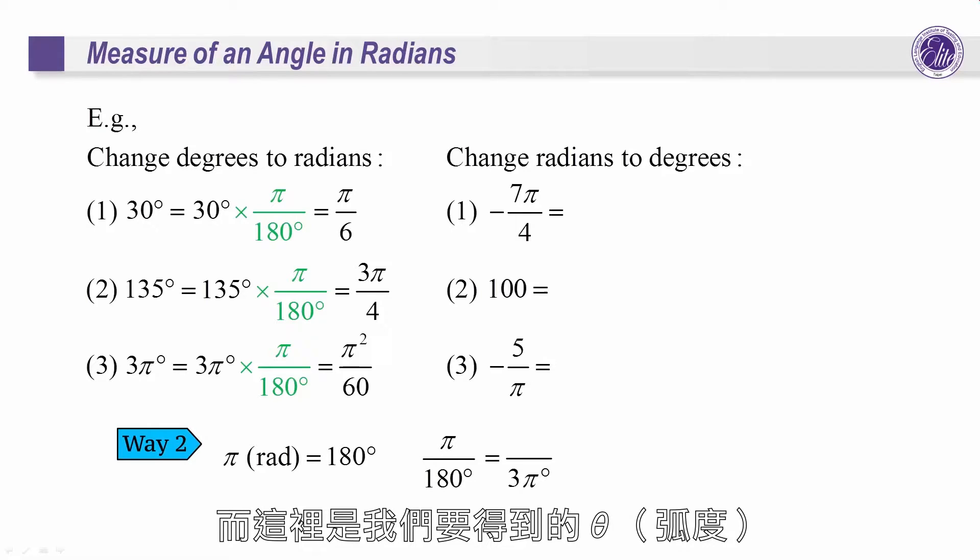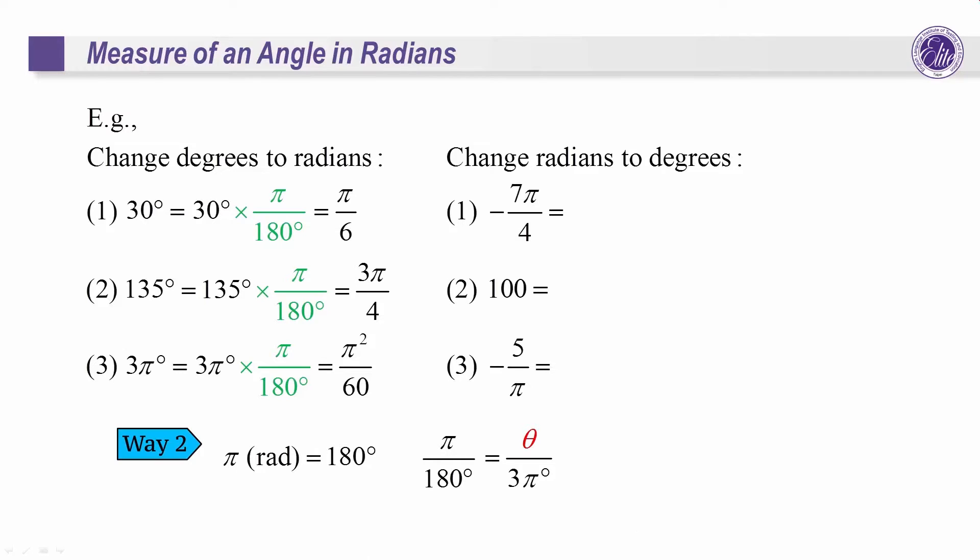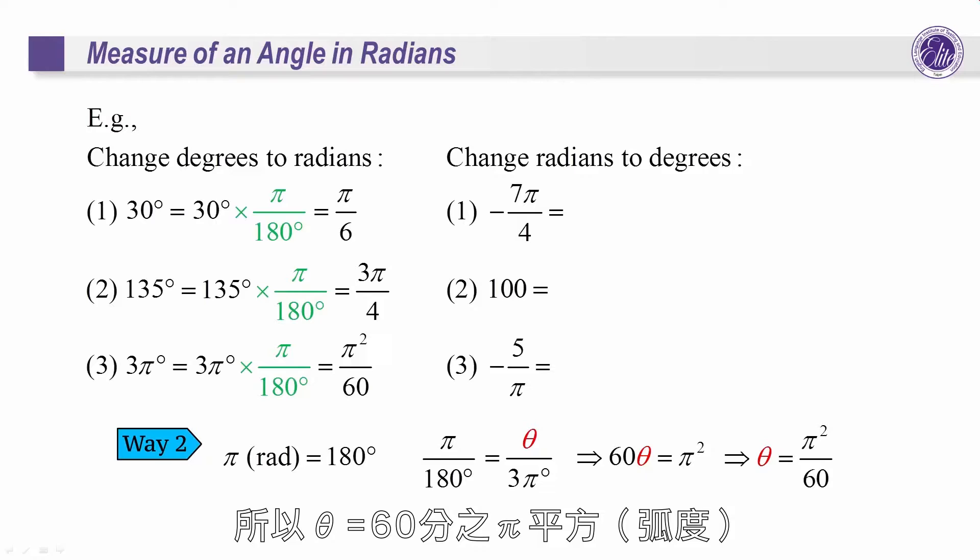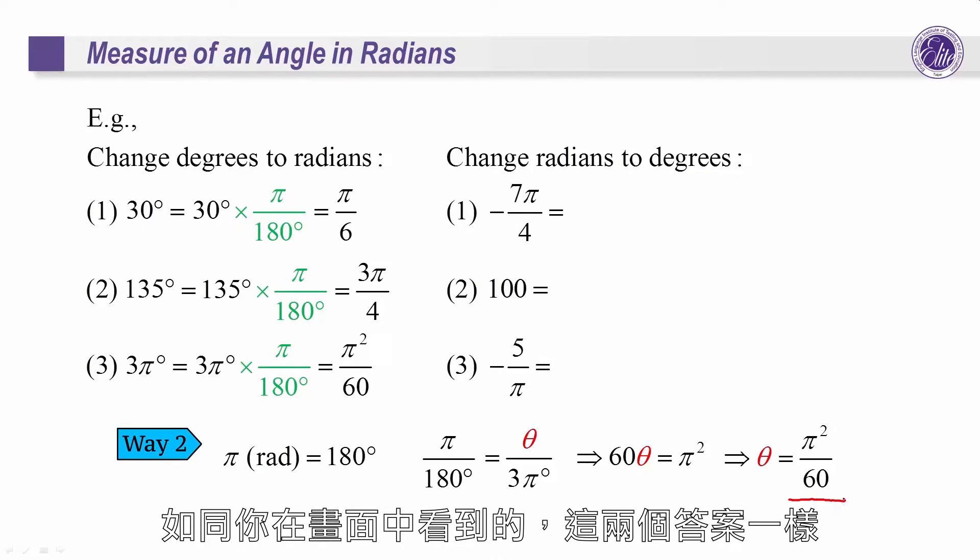And theta is the answer in radians that we try to get. Theta equals pi squared over 60 in radians. As you can see, these two answers are the same.